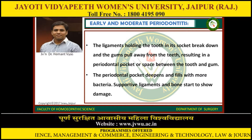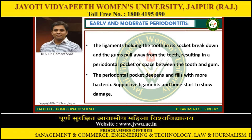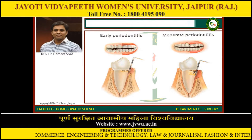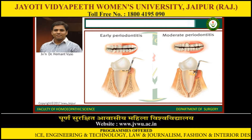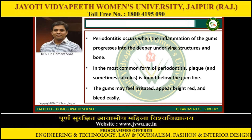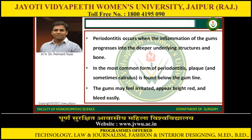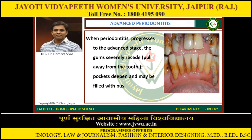In early and moderate periodontitis, the ligaments holding the tooth in its socket break down and the gum pulls away from the teeth, resulting in a periodontal pocket — a space between the tooth and gum. The periodontal pocket deepens and fills with more bacteria, and supporting ligaments and bone start to show damage. Periodontitis occurs when inflammation of the gums progresses into the deeper underlying structure and bone. The gums may feel irritated, appear bright red, and bleed easily.